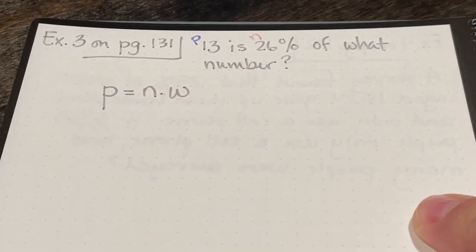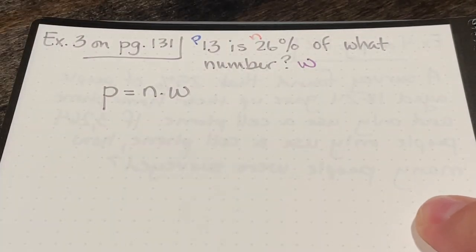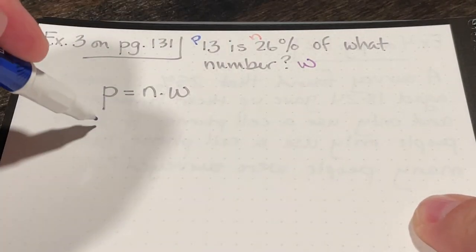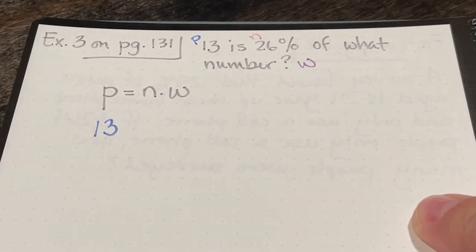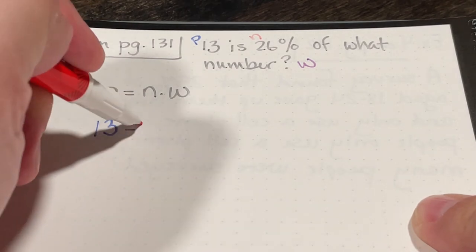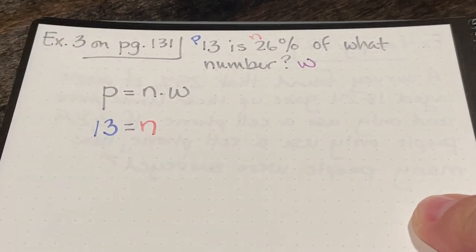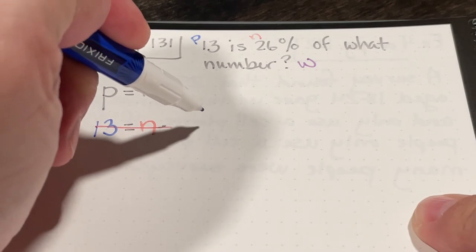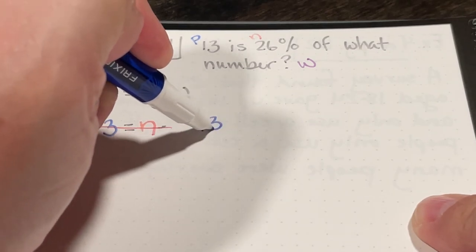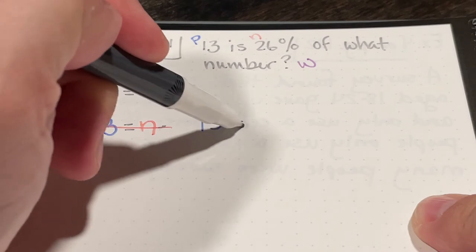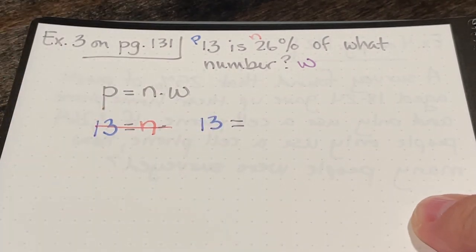So in my problem, my part is 13, my percent is 26%, and my whole, which I don't know, is going to be w. So then I just need to rewrite my equation, substituting what I know for p and n. And since I already know what n is, I don't have to write n, I'm going to rewrite it as 13 equals 26% times w.